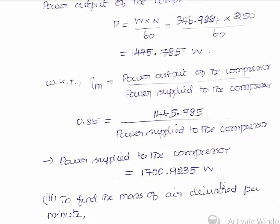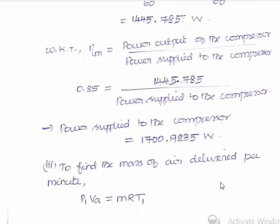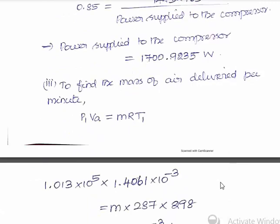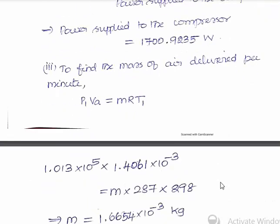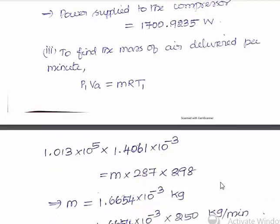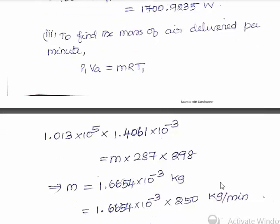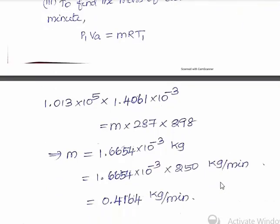In the third part, we find the mass of air delivered per minute using PV = mRT, giving P1 × VA = m × R × T1. Solving for m per cycle gives 1.6654 × 10⁻³ kg. Multiplying by speed of 250 rpm, the mass of air delivered per minute is 0.4164 kg/min.